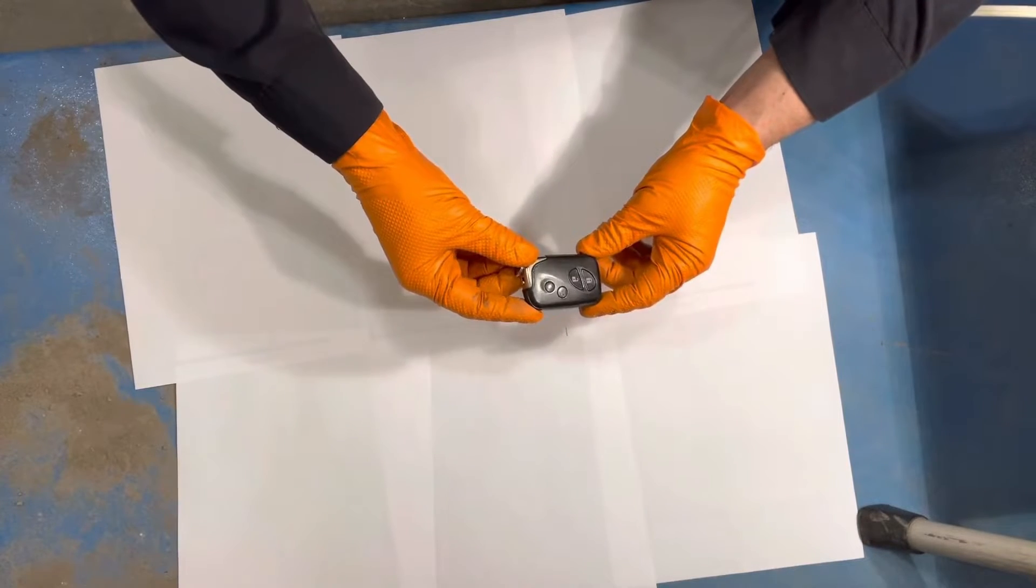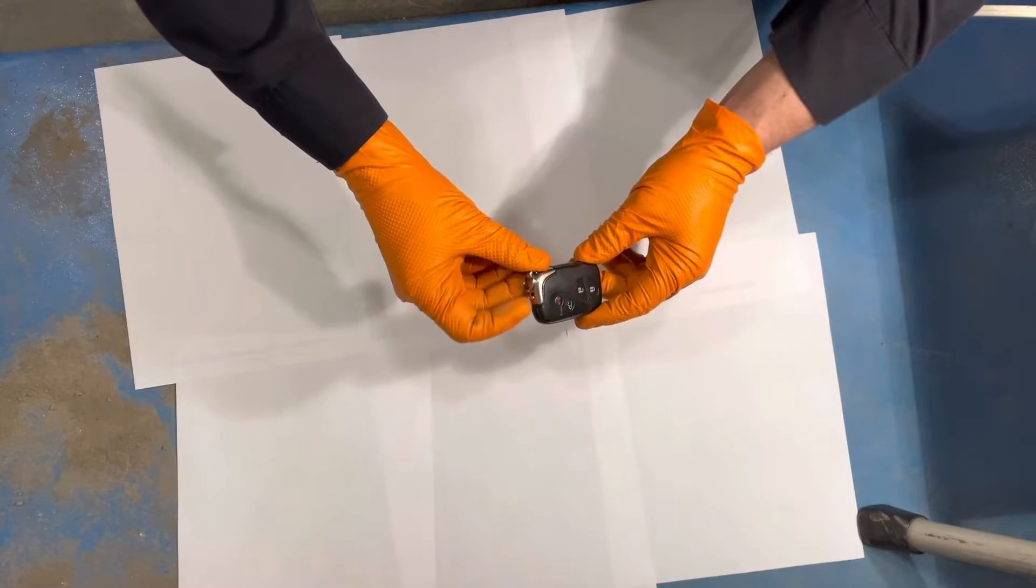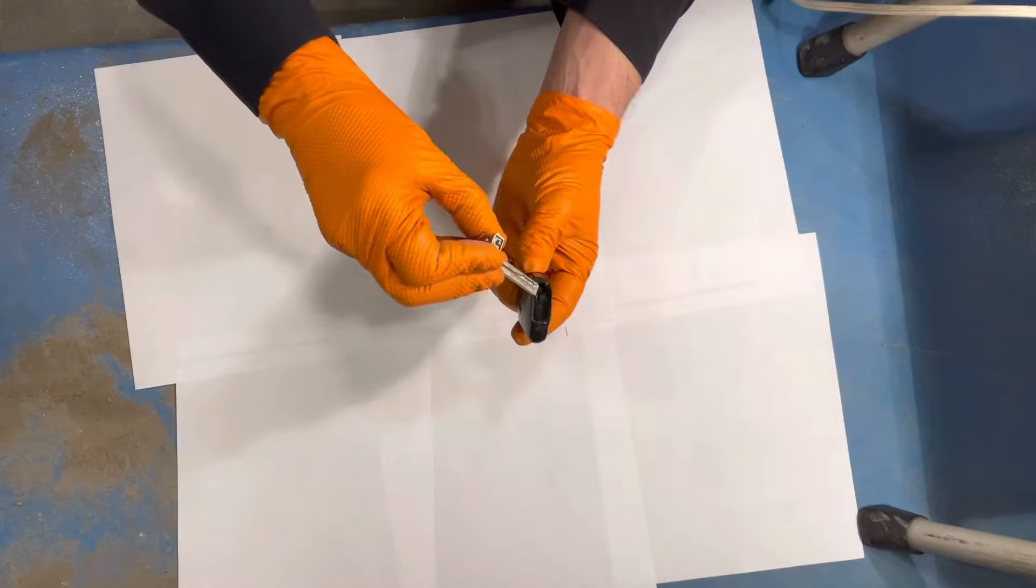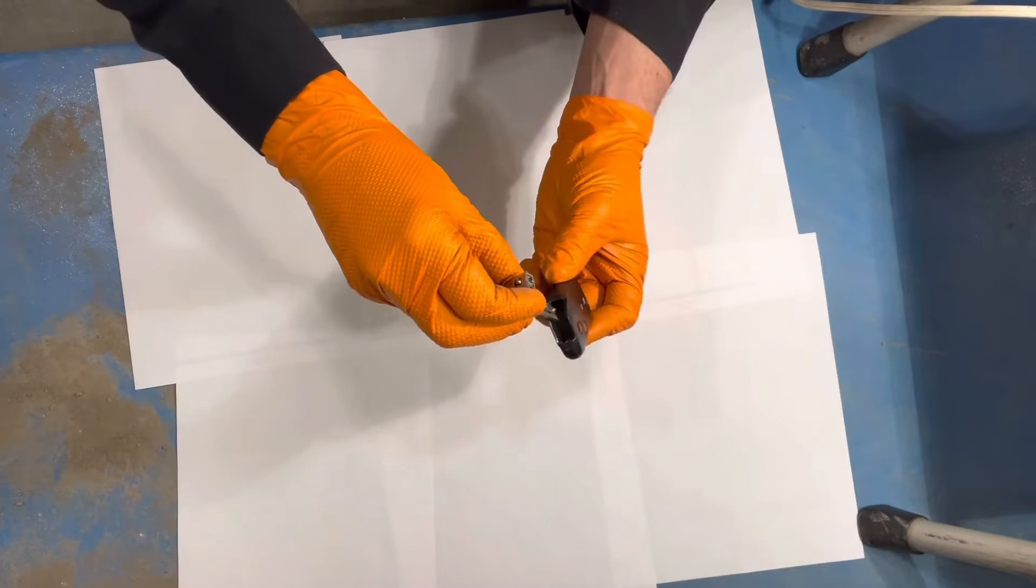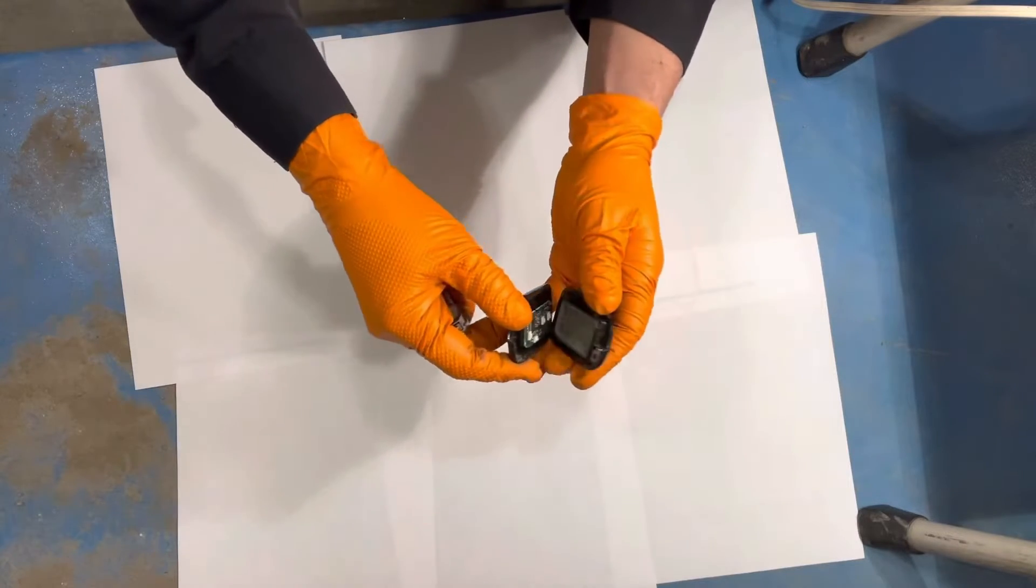Here's how you replace the key fob battery on this model. Just pull on this little tab right here and pull the metal key out. Then you have a slot right here on the corner, so get the key into the slot and twist it and the casing is going to come apart.